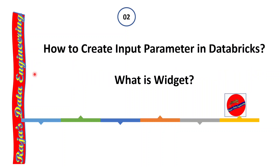Moving on to the next question: how to create input parameters in Databricks, or what is a widget? Widgets are a concept in Databricks using which we can create input parameters. We can use the dbutils widget command to create widgets. Types of widgets include text widgets, dropdown widgets, combo box, and multi-select. We can define default values for widgets, use the get command to retrieve widget values into a variable, and also remove individual or all widgets at once.